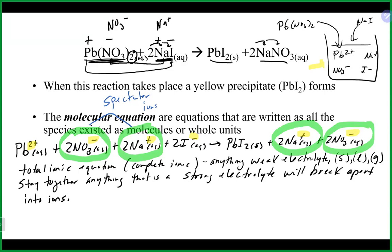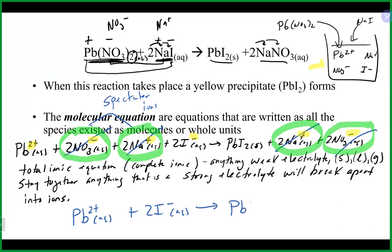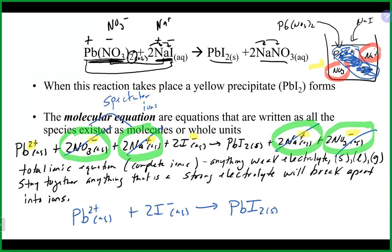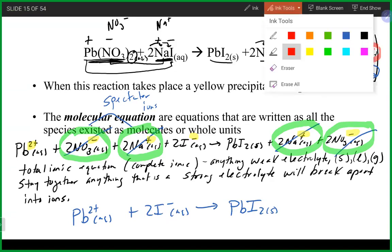After canceling spectator ions, what you're left with is the heart of the reaction — what is truly happening. In this case, it's the Pb²⁺ ion going to find the I⁻ ion, and they come together to make the solid PbI₂. The spectator ions are just still floating around having a good time, not really doing much. The equation that remains after removing spectator ions is called the net ionic equation, which shows the ions that actually come together to make the product.